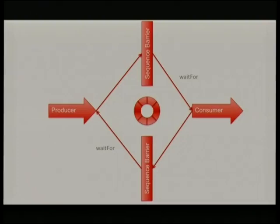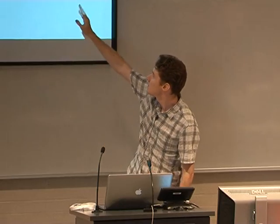That protection and those happens-before semantics are done outside of the ring buffer by sequence barriers. When you look in the code, the ring buffer will create sequence barriers for you. We work quite hard to have a separation of concerns in the code — that's one of the reasons it's quite fast, each thing has its own independent job, reducing contention. Here you can see we have a sequence barrier between the producer and the consumer, such that the consumer will call waitFor on the sequence barrier, which blocks until the producer's sequence number has reached the number the consumer is waiting for.